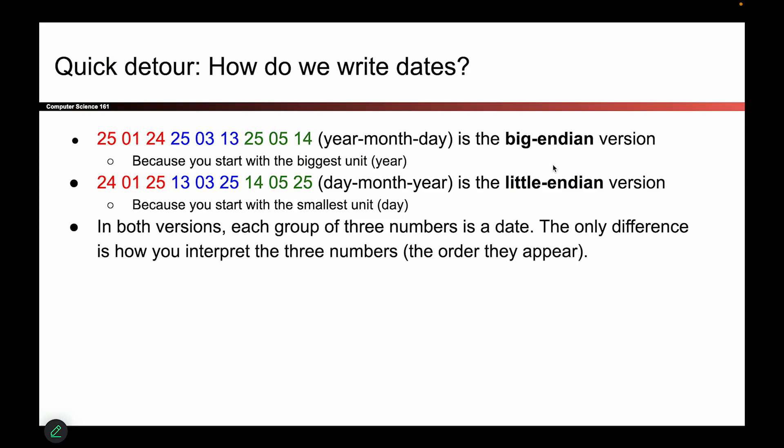And the order that you decide to read these determines whether your system is Big Endian or Little Endian. And again, both are OK. The important thing is just that you agree with everyone else on whether we're using Big Endian or Little Endian. So in both cases, you're reading a chunk of three numbers as something more sophisticated, like a date. And the only difference is how you interpret the numbers. What order does the year, month, day appear?